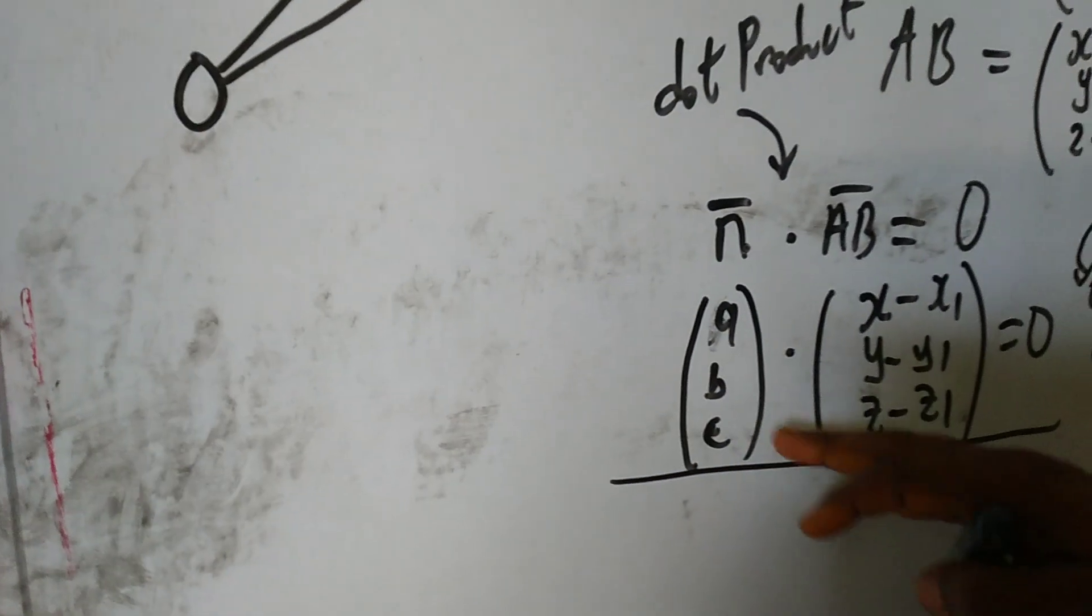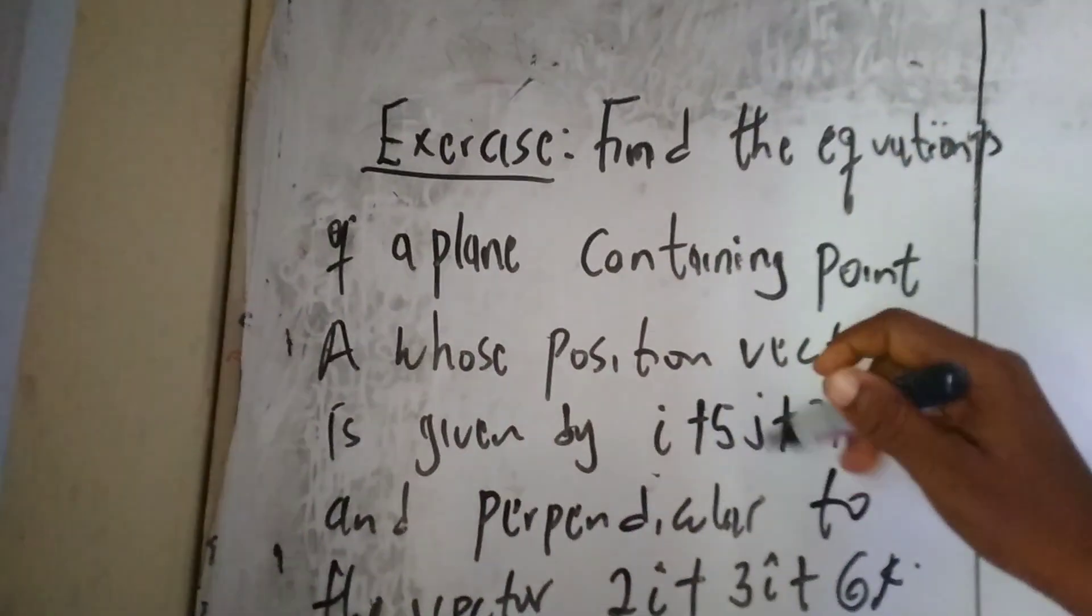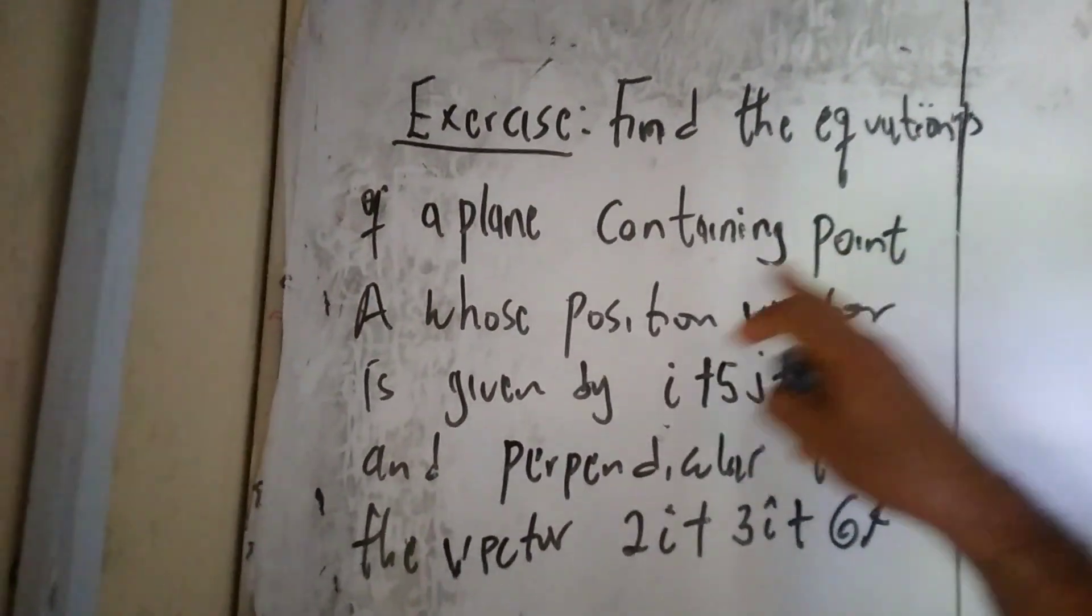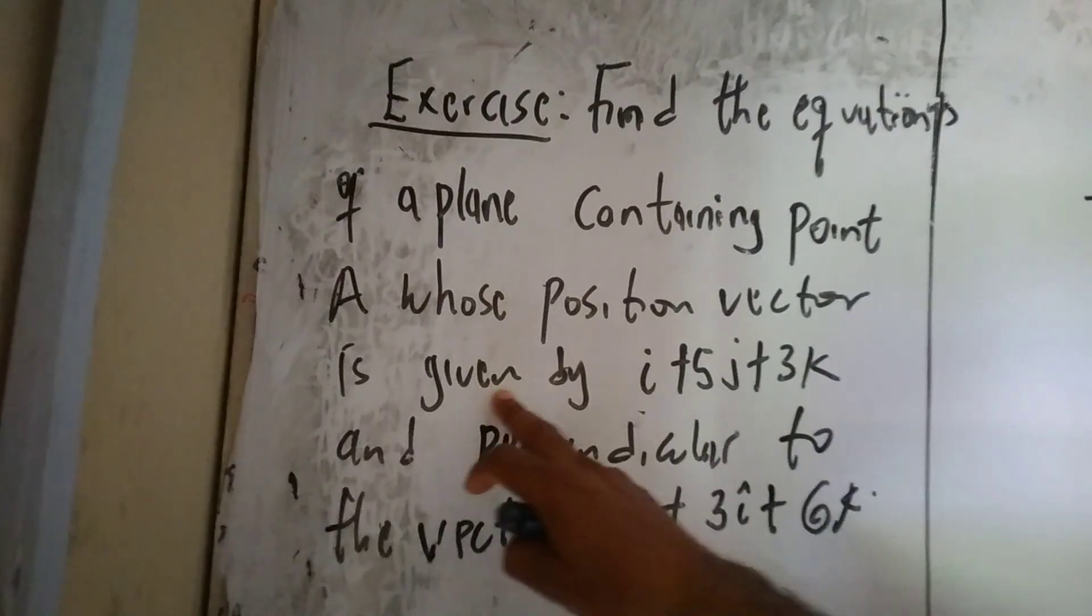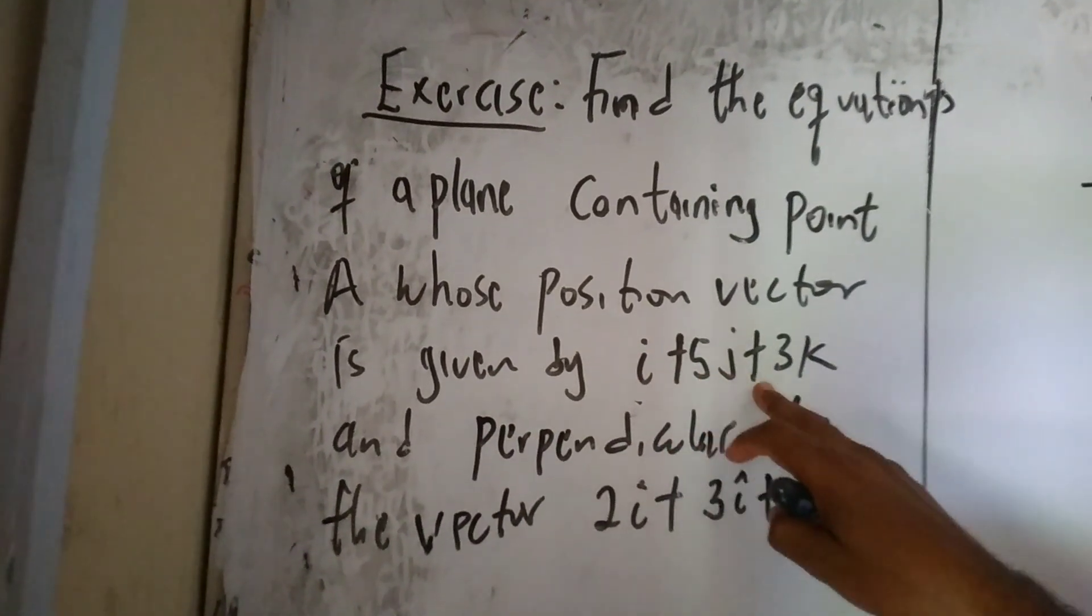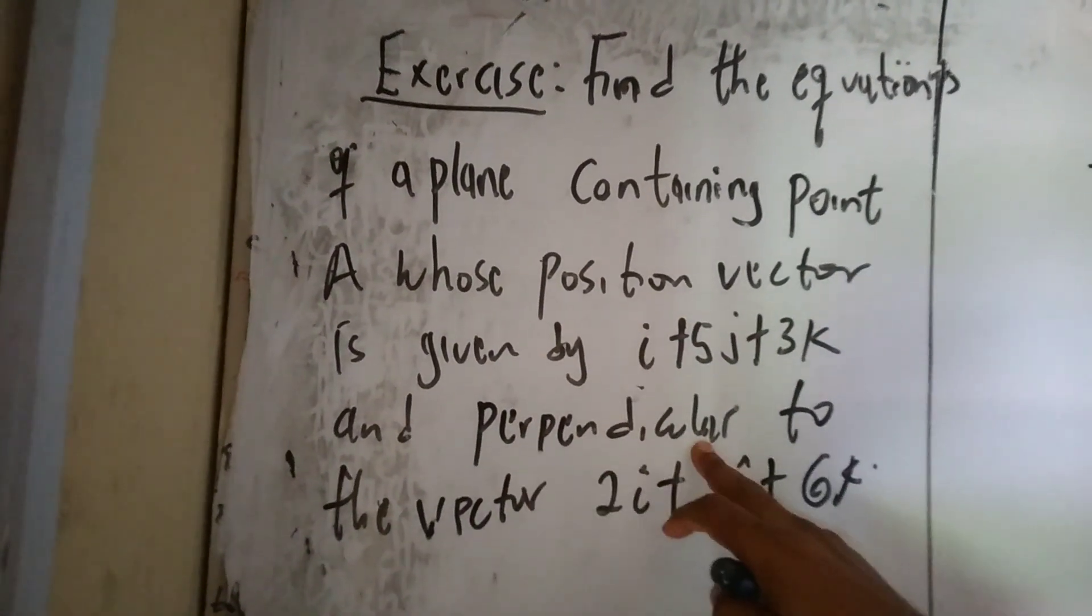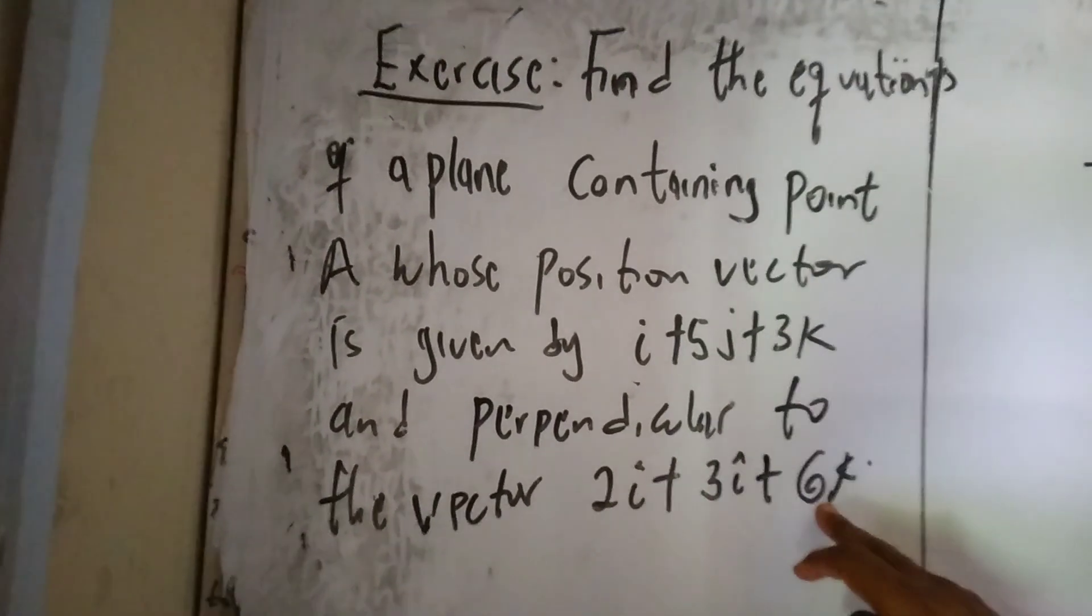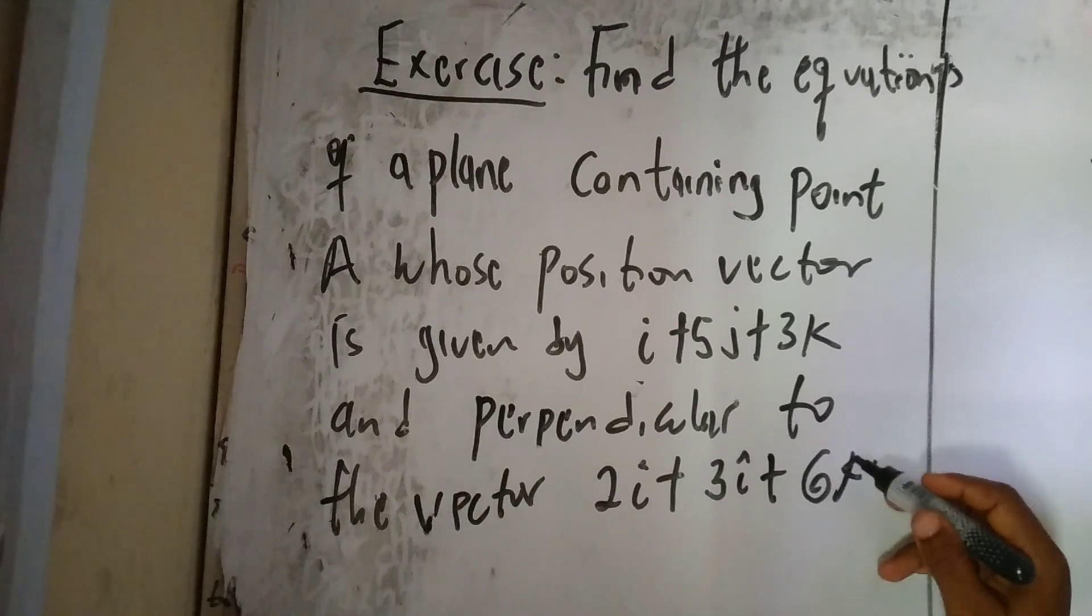So, this expression I have here now, we are going to use it to solve an exercise here. The question says, find the equations of a plane containing point A whose position vector is given by i plus 5j plus 3k and perpendicular to the vector 2i plus 3j plus 6k.